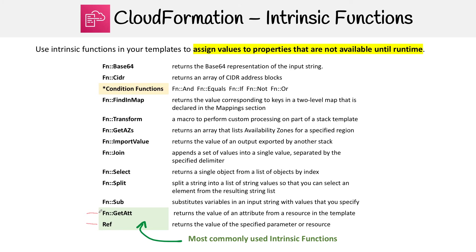Reference is going to return the value of a specified parameter or resource, and GetAtt will return the value of an attribute from a resource in the template. If that doesn't make sense right now, don't worry — we're going to cover it shortly.